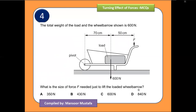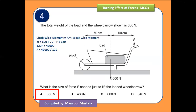The next question is the same type, but the pivot is on the left side, so all forces generate moments on the right-hand side. There are two forces: 60 newtons (weight) acting downward and f acting upward. The distance of f from the pivot is 120 centimeters — calculated as 70 plus 50. Solving for f gives an answer of 350 newtons.